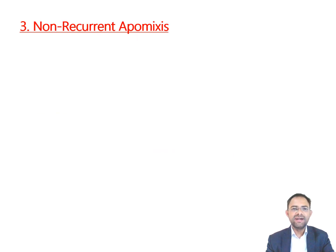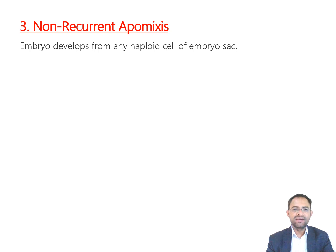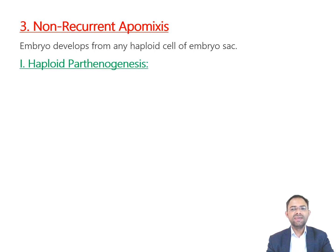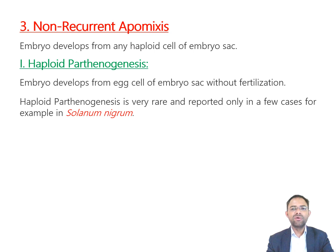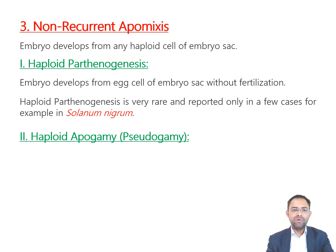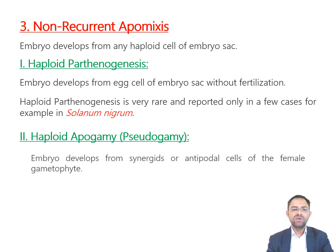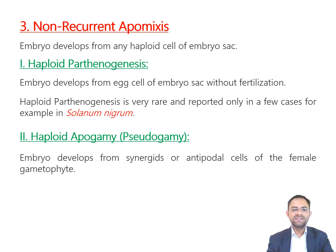The third type is non-recurrent apomixis. In non-recurrent apomixis, the embryo develops from any haploid cell of the embryo sac. It may be of two types. First is haploid parthenogenesis, where the embryo develops from the egg cell of the embryo sac without fertilization; it is very rare and reported only in a few cases such as Solanum nigrum (family Solanaceae). Second is haploid apogamy, also known as pseudogamy, where the embryo develops from synergids or antipodal cells of the female gametophyte; commonly found in Allium species.